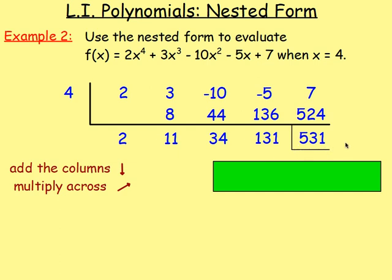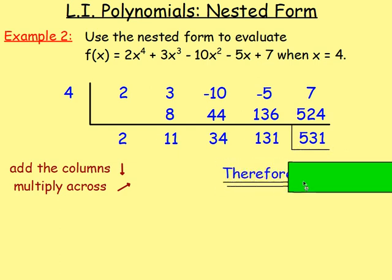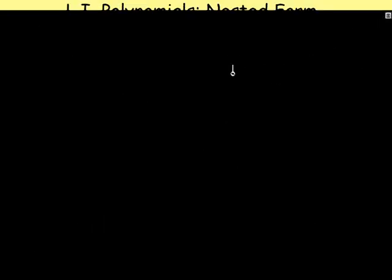And that is where you would stop. Again, I'm just adding this extra line. Meaning then, if you worked out f of 4, you would get 531. That would be your answer. Let's try one more.